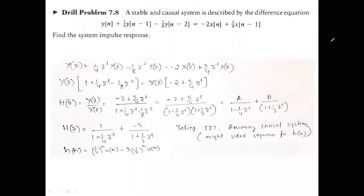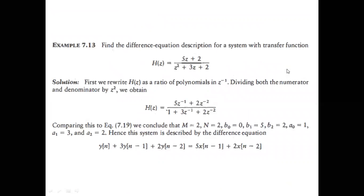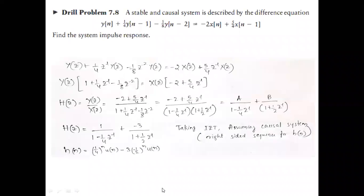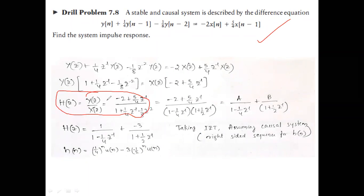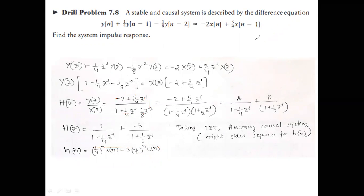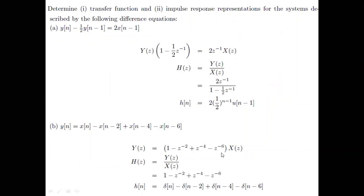Summary of what we just did: in the previous numerical we were given the transfer function and derived the difference equation. Here, we are given the difference equation and from it we can arrive at both the transfer function and the impulse response. The clue that the system is stable and causal pins down which of the four possible impulse responses is correct.